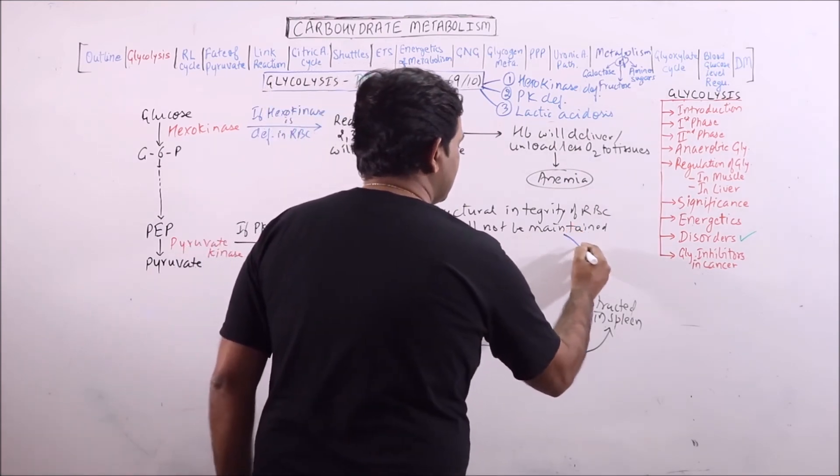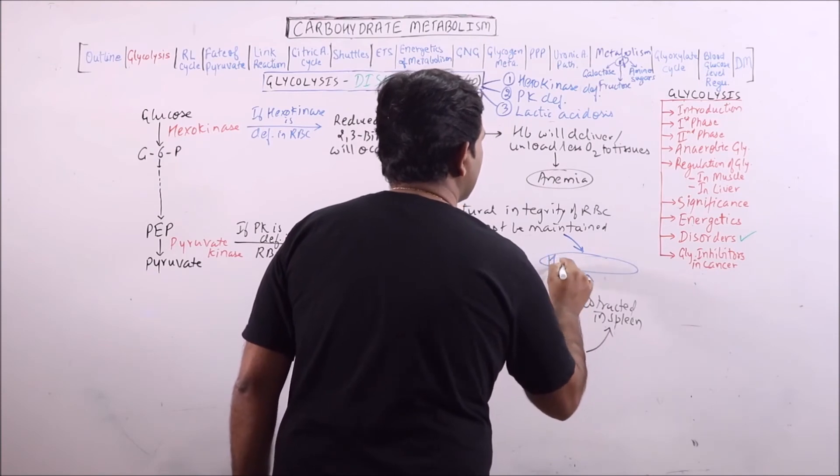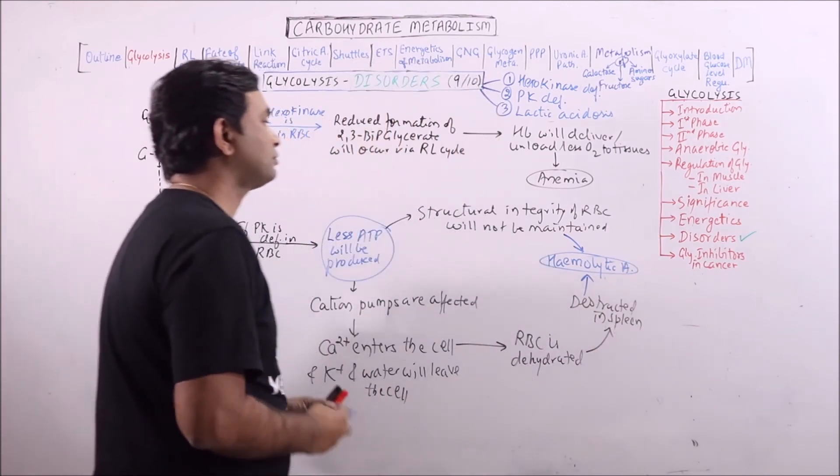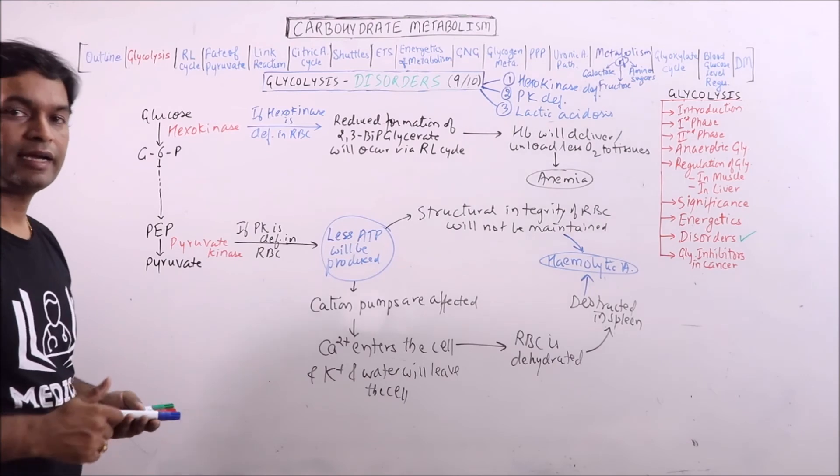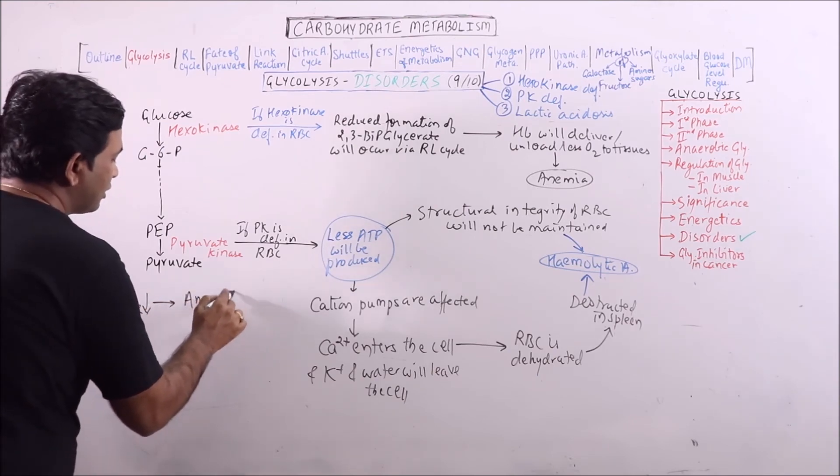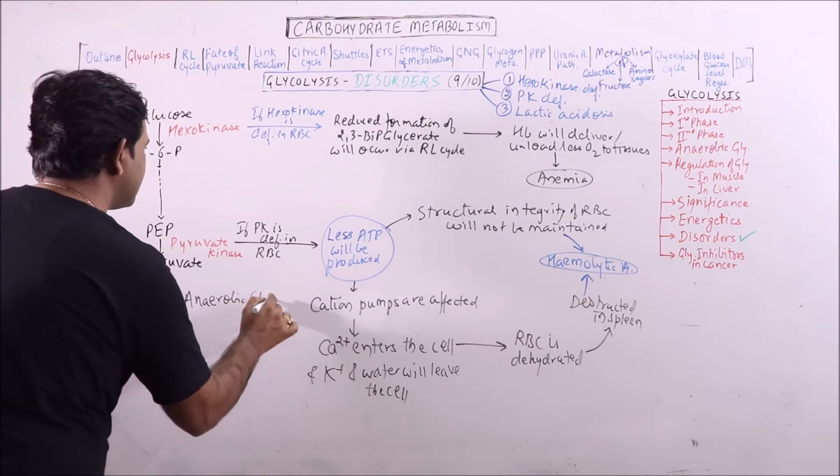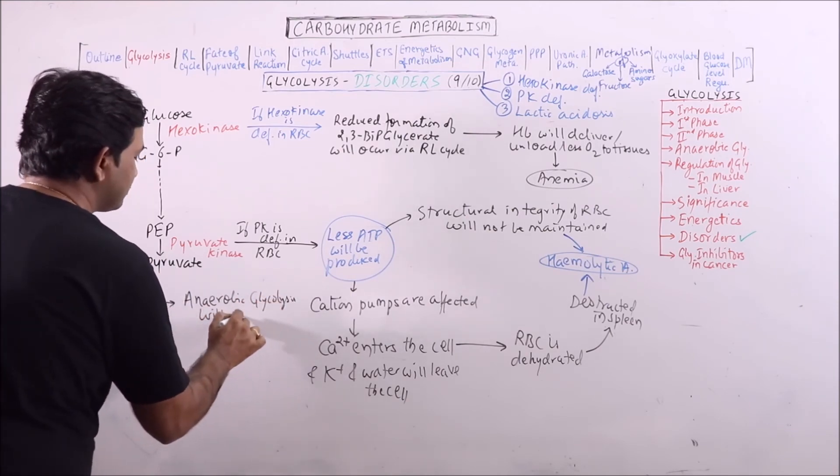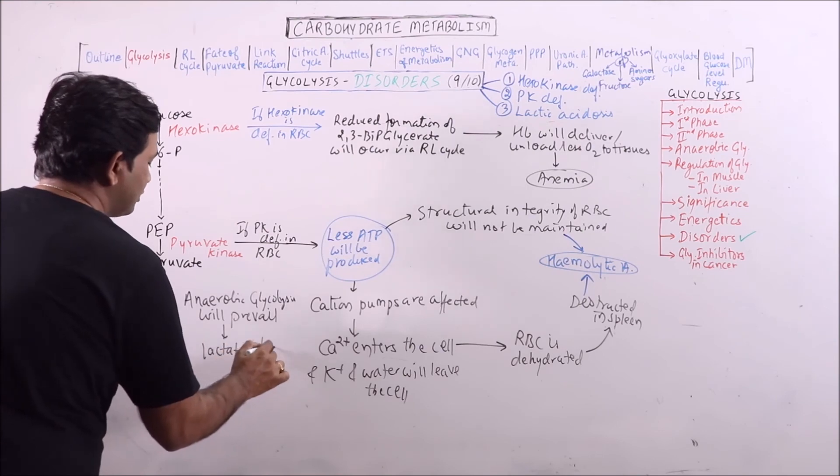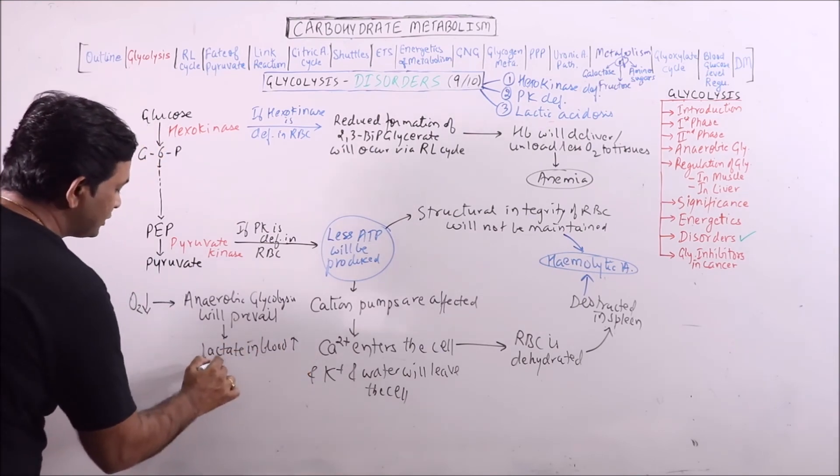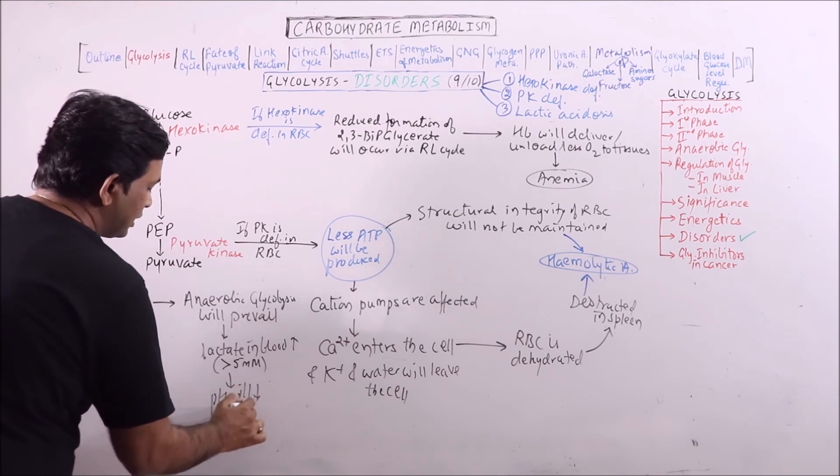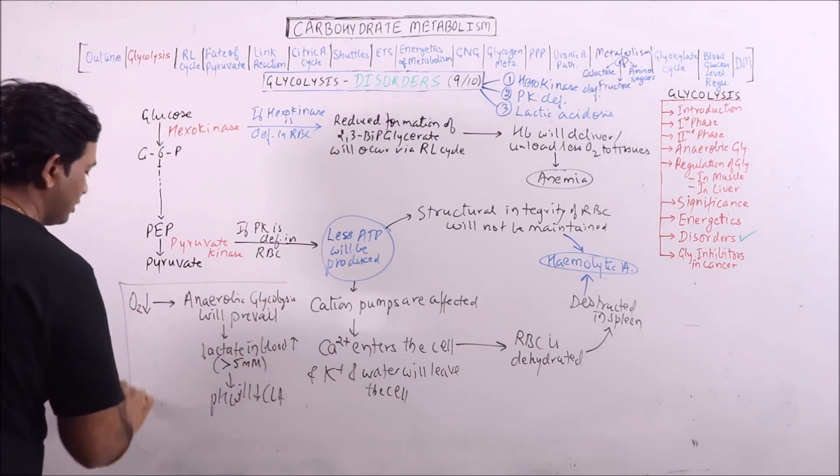Both of these result in hemolytic anemia. The last one is lactic acidosis. When oxygen is deficient, anaerobic glycolysis will prevail. Lactic acid and lactate in blood will increase. When it increases above 5 millimolar, the pH will decrease, and that is known as lactic acidosis.